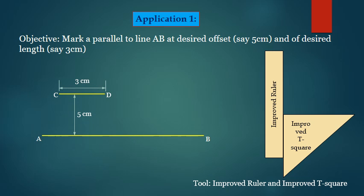Only in one single operation, line CD can be offset at 5 cm and the length CD can be 3 cm. Number of operations required is only 1.